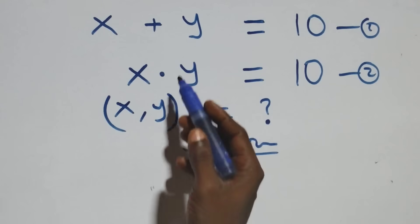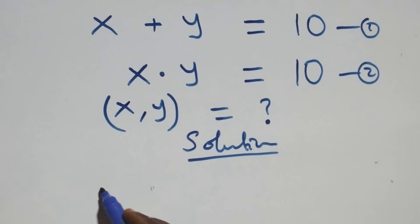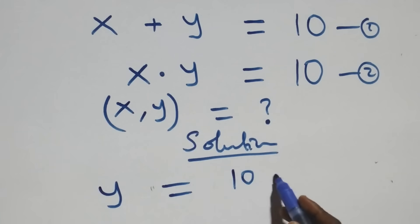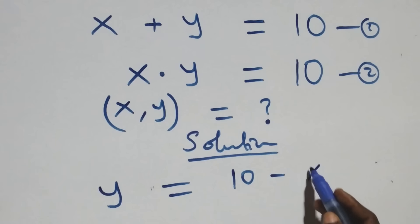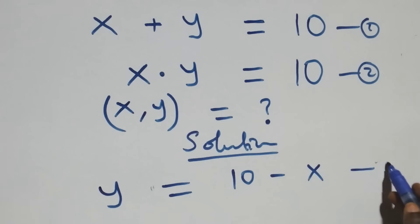From equation one, we make y the subject, and this becomes y equals to ten minus x. We can label this as equation three.